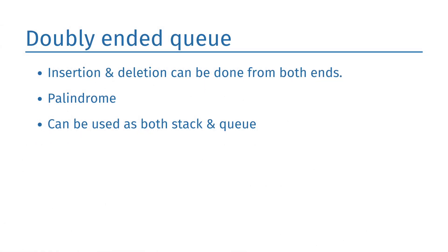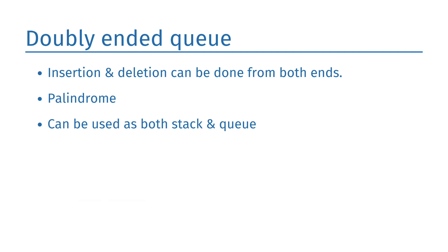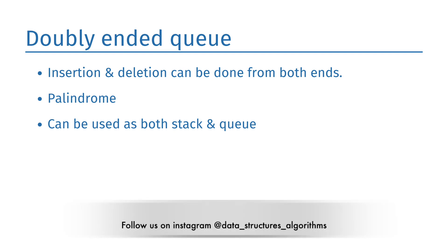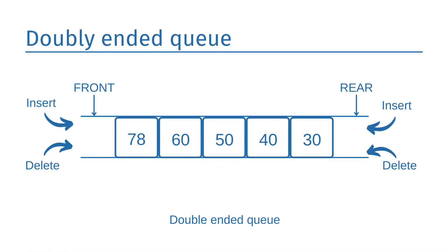In the doubly ended queue (DEQ), insertion and deletion can be done from both ends of the queue — either from the front or rear. It can be used as a palindrome checker, since if we read a string from both ends it would be the same. It can also be used as both a stack and a queue, as it allows insertion and deletion on both ends. It can be considered as a stack because the stack follows LIFO. In DEQ, it is possible to perform both insertion and deletion from one end, and DEQ does not follow the FIFO principle. The queue contains elements 78, 60, 50, 40, and 30, and insertion and deletion can be performed from both front and rear ends.